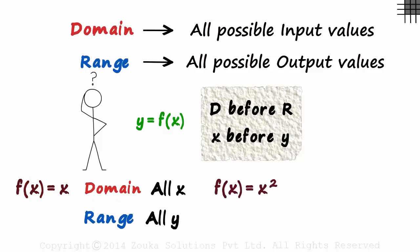Here's the second function. F of x is equal to x squared. What will be the domain and the range of this function? Try it out! The input x can take any value. So the domain will be all x.